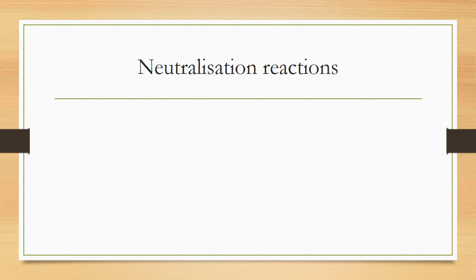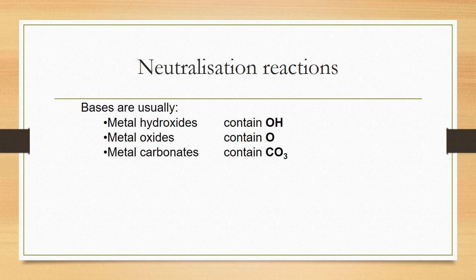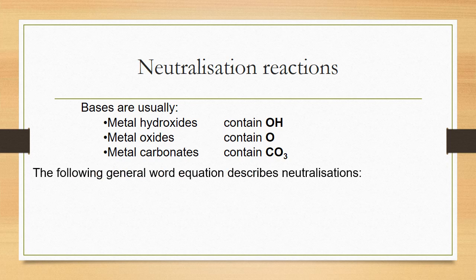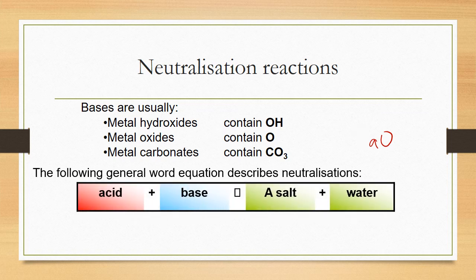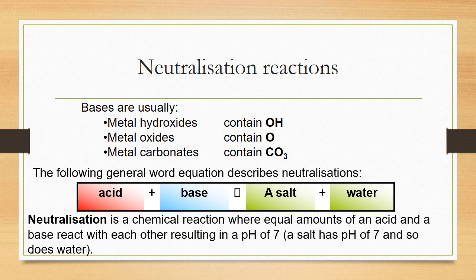Acids can neutralize alkalis and alkalis can neutralize acids. Bases — metal hydroxides, metal oxides, and carbonates — all contain OH or oxygen in their formulas. The general word equation for neutralization is: acid + base → salt + water. Neutralization is a chemical reaction where equal amounts of acid and base cancel each other out, leaving only salt and water, both of which have a neutral pH.